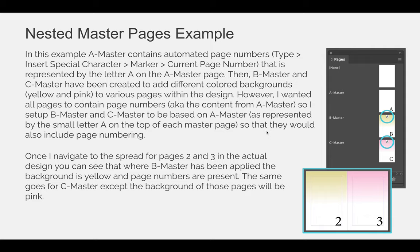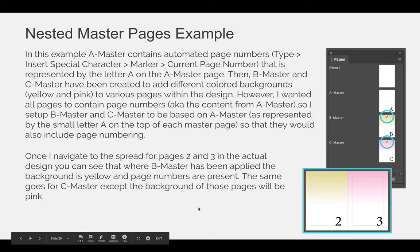Once I apply these Master Pages — Master A, B, and C — to the correct pages in my design and navigate to a particular page, in this example the spread for pages 2 and 3, you can see in the actual design that where Master B has been applied, the background is yellow and it also has the automatic page numbering. And where Master C has been applied, it has the pink background and the automatic page numbering.